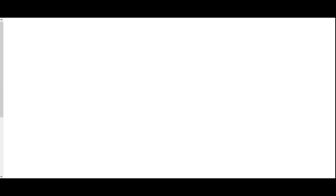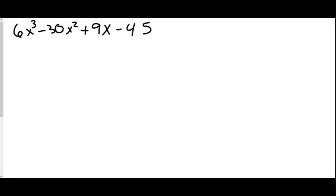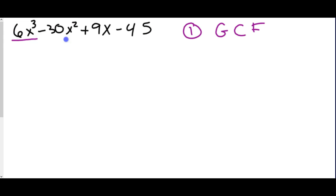The third type of factoring is factoring by grouping. With any type of factoring, we should always check for a greatest common factor first. Looking at the expression, I ask: is there anything that divides into all four terms? They don't all have letters — 45 has no letter next to it, so there won't be any variables involved. But they can all divide by a number. Starting with 6, things that divide into 6 are 1, 2, 3, and 6.